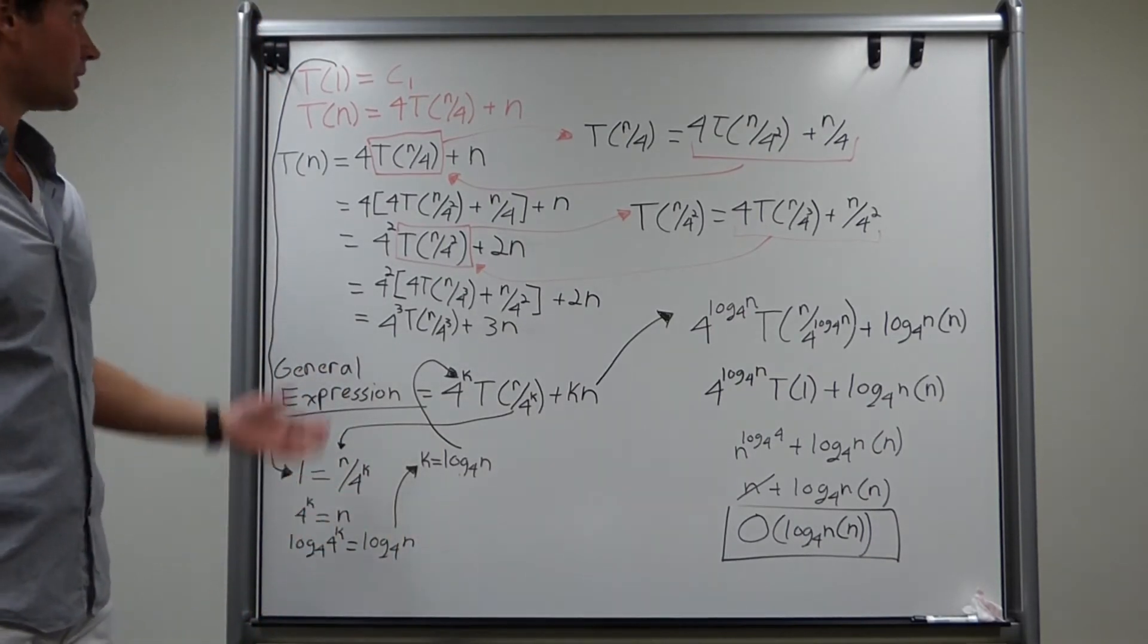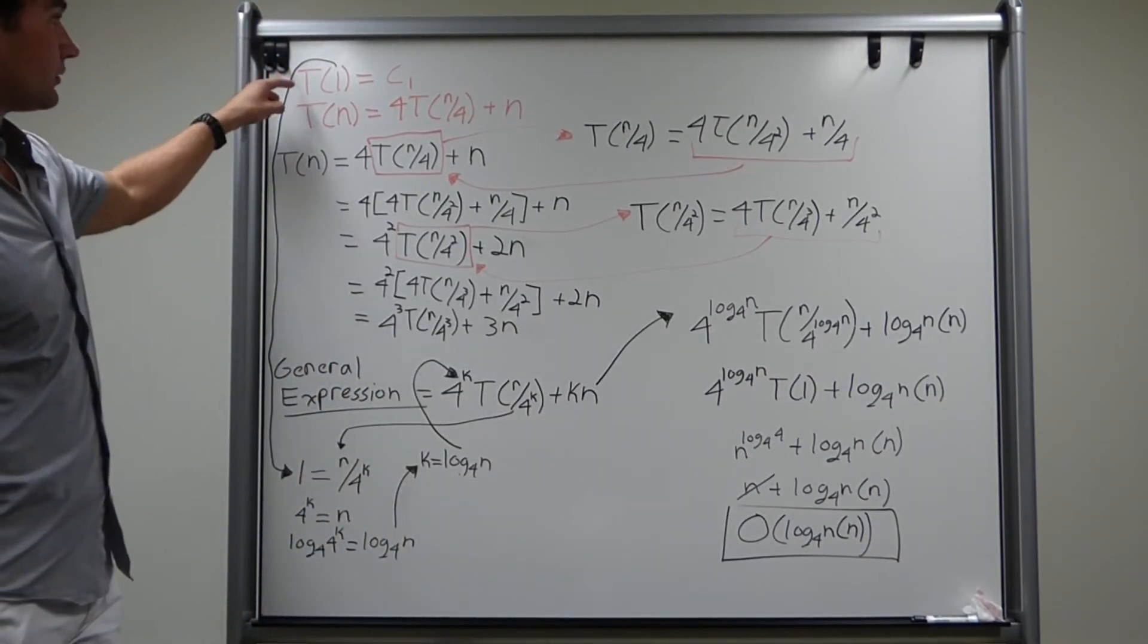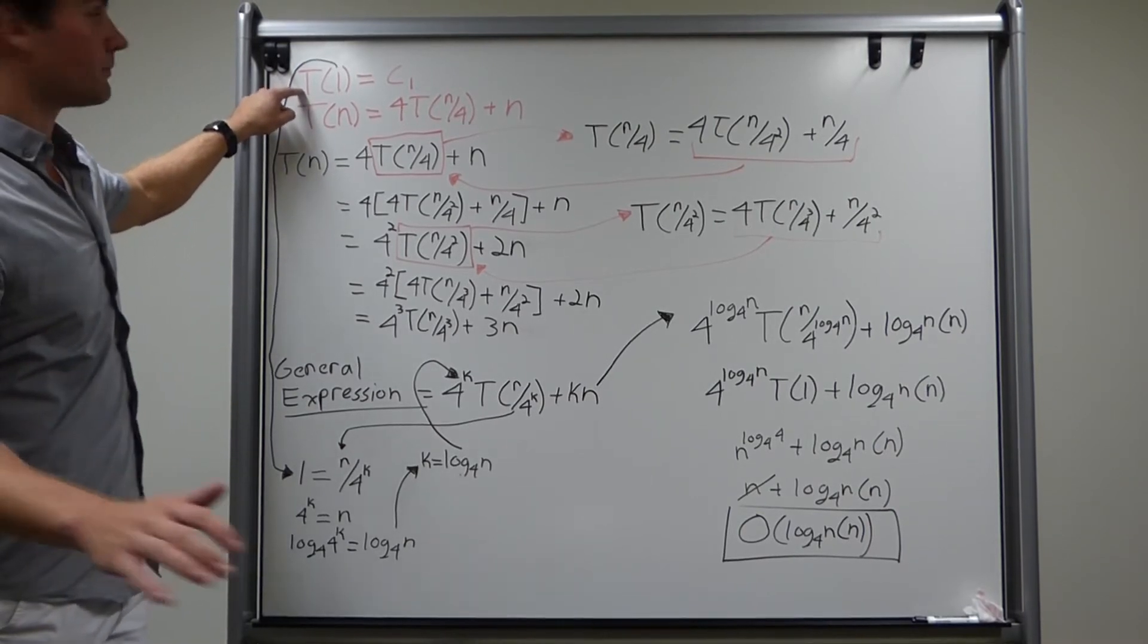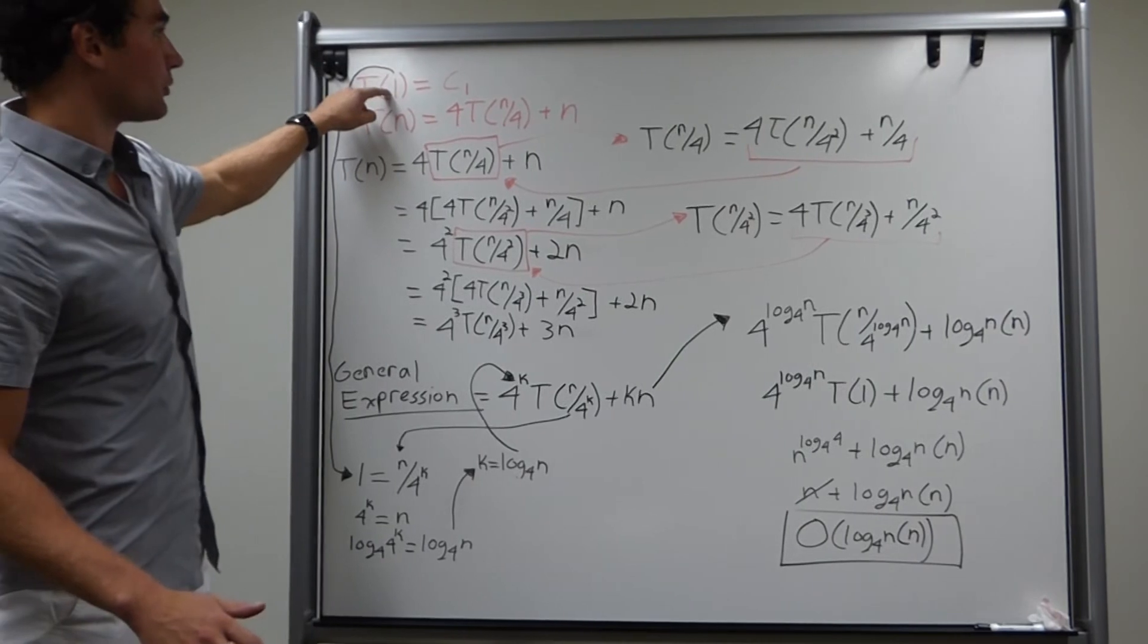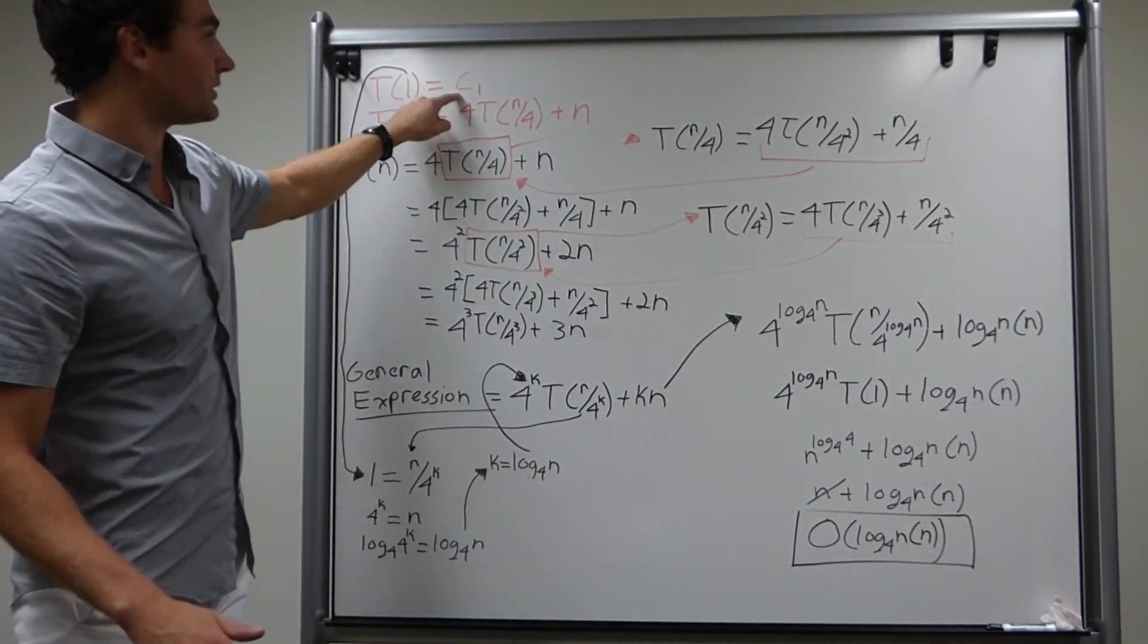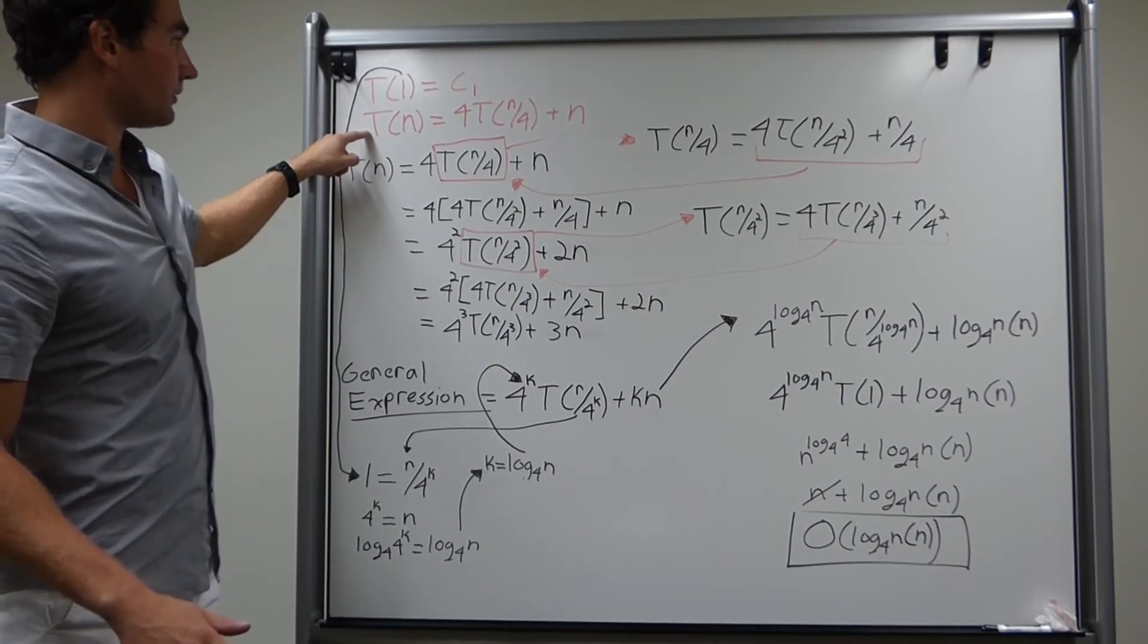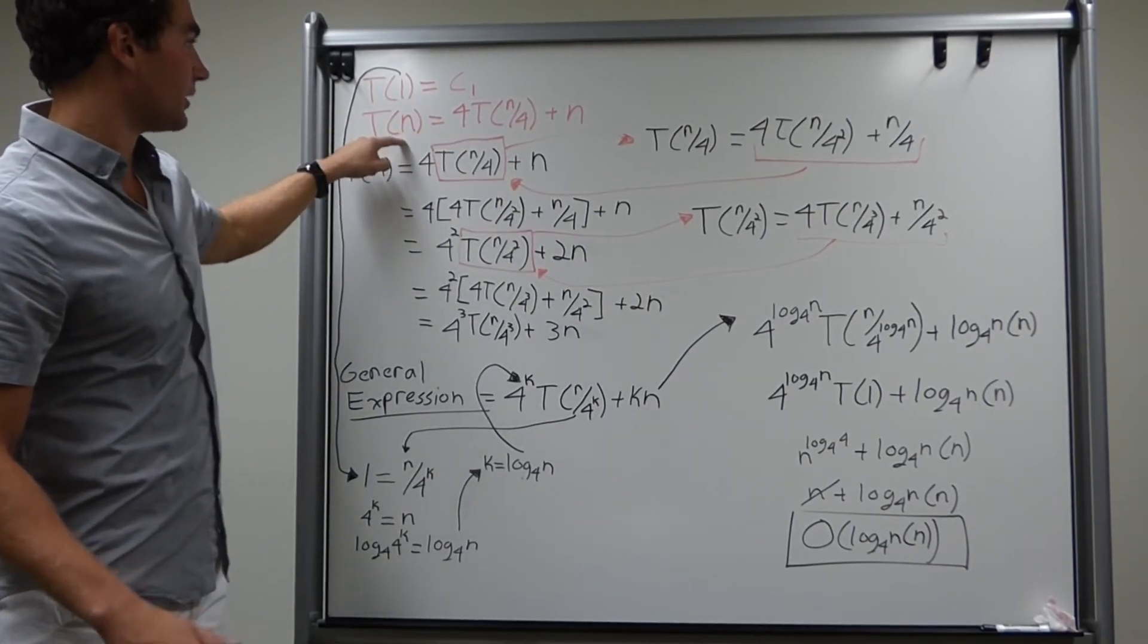Just to walk you through what you just saw, we have up on the board here the recurrence relation. Here's the base case. We're going to go through the algorithm together. Here's where the program will end. It's going to produce a constant time operation. Here's the recurrence relation that we have. Notice how it's in terms of itself.